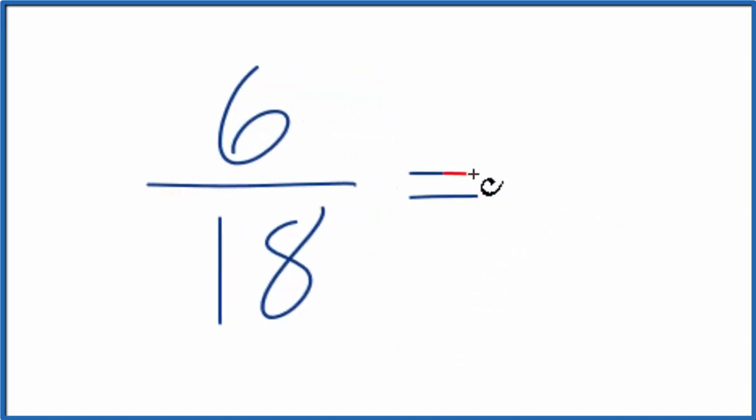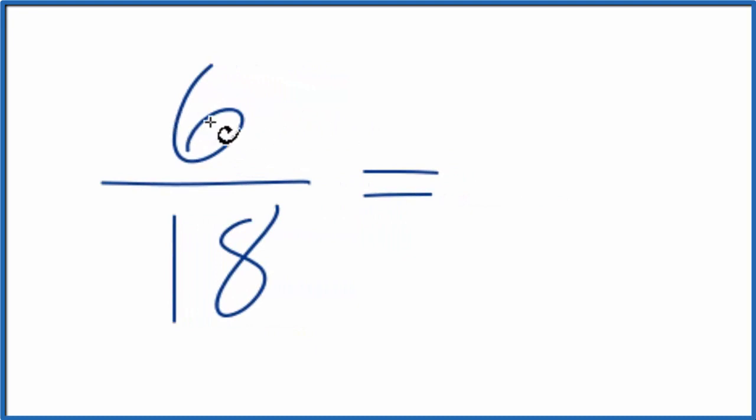So I could just divide the numerator here, 6, by 6. 6 divided by 6 is 1. 18 divided by 6, that's 3.